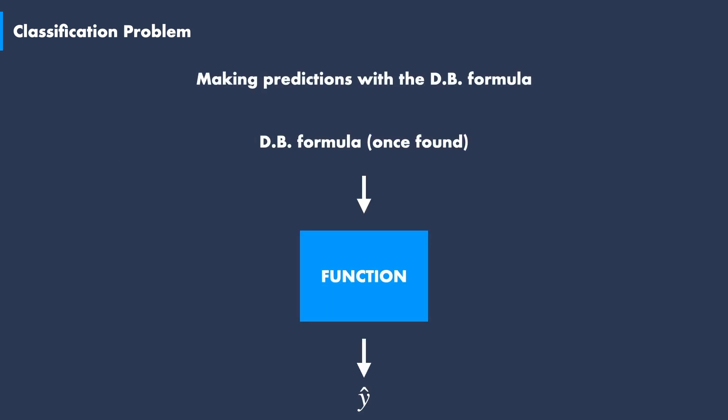Once the formula for the decision boundary is found, we can apply some sort of an operation, in mathematical terms a function. This function will give us the Y hat predictions for the data labels. The shapes and forms of these sort of functions will be discussed in great detail in the upcoming videos.